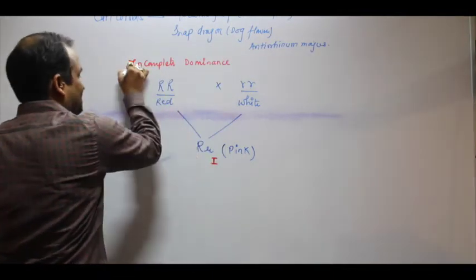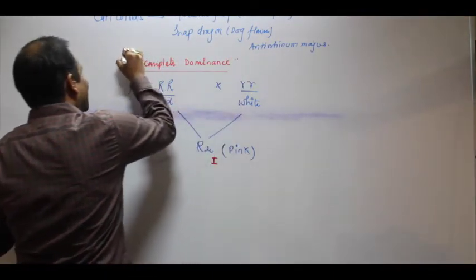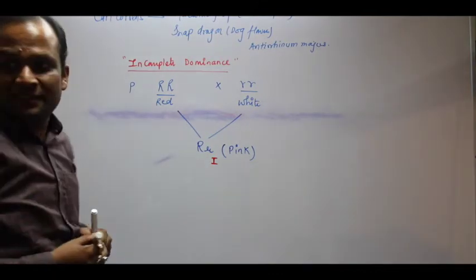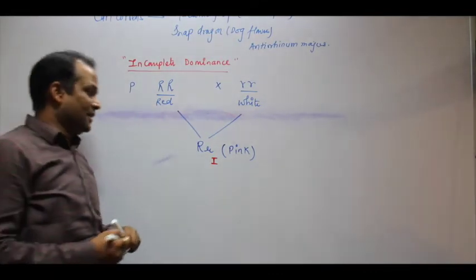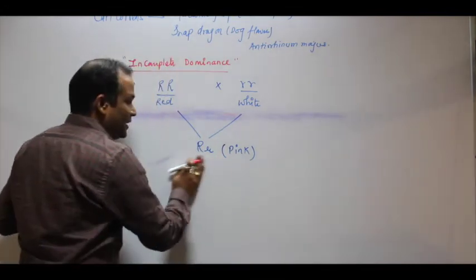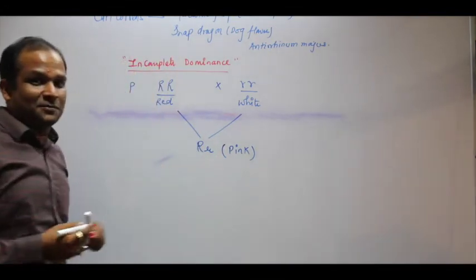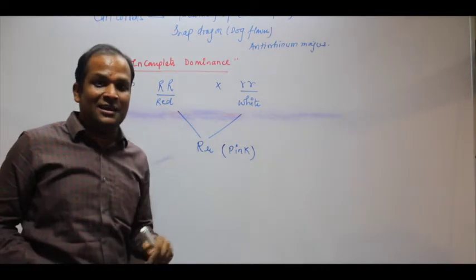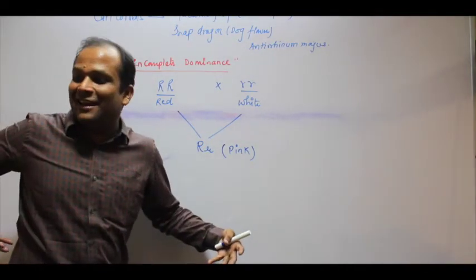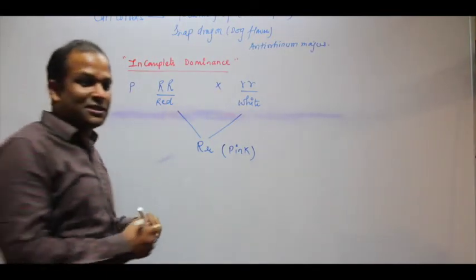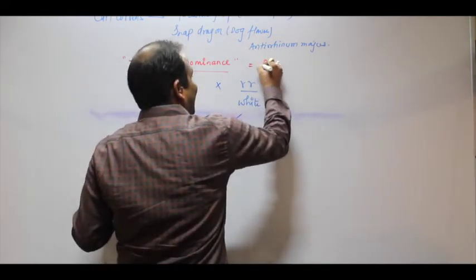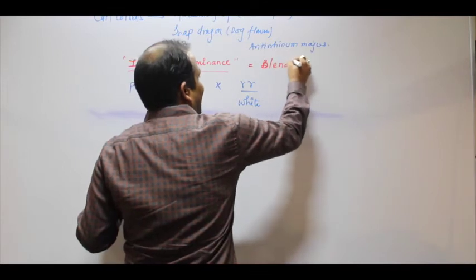He said dominance is there - red is also showing, but not completely. So what will you call this? Incomplete dominance. Sometimes a misnomer term is used for this incomplete dominance which is blending inheritance.